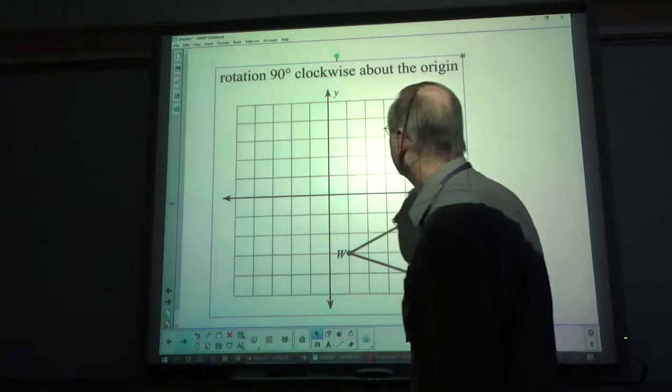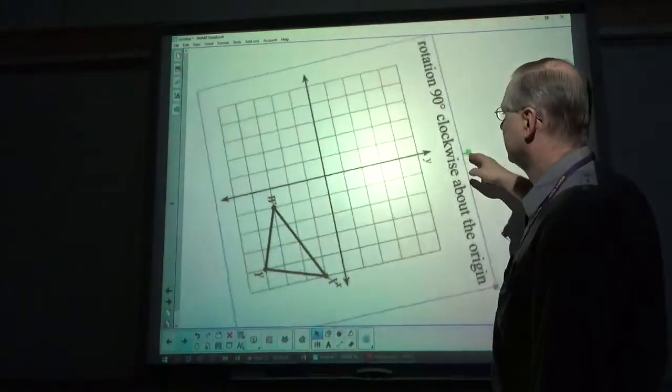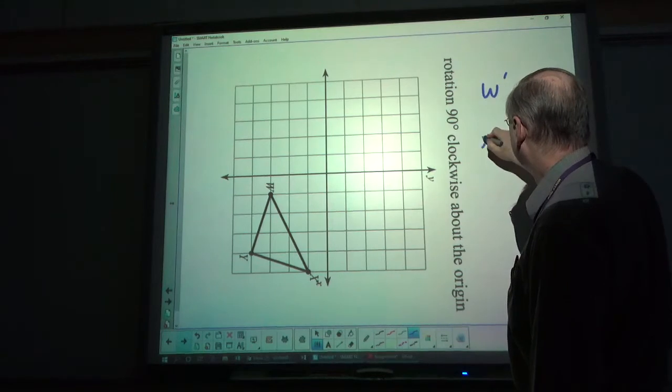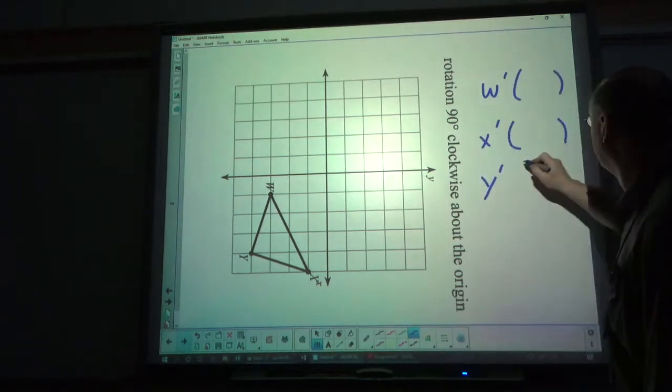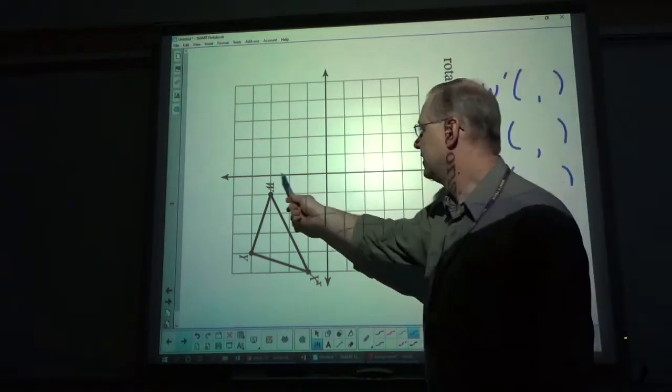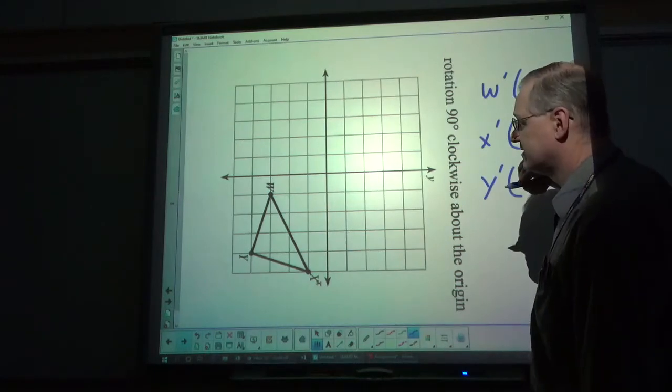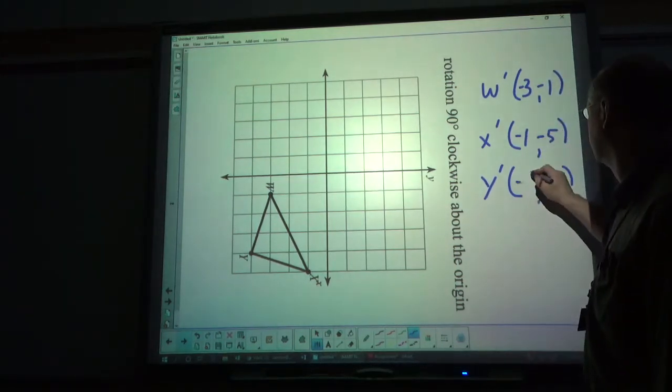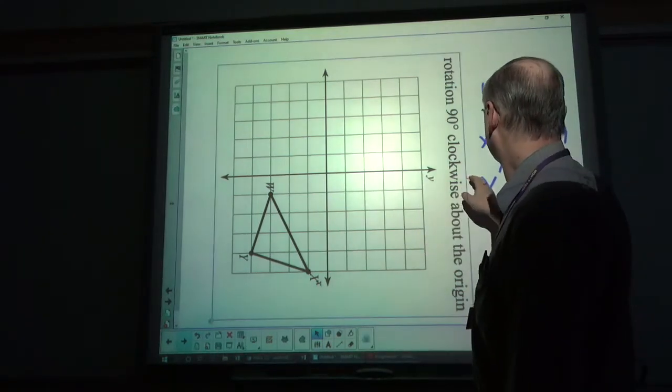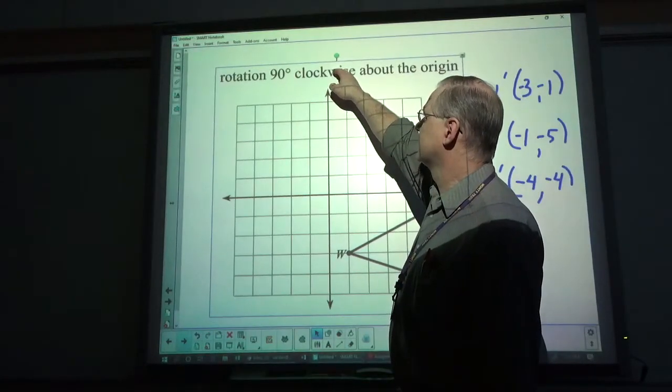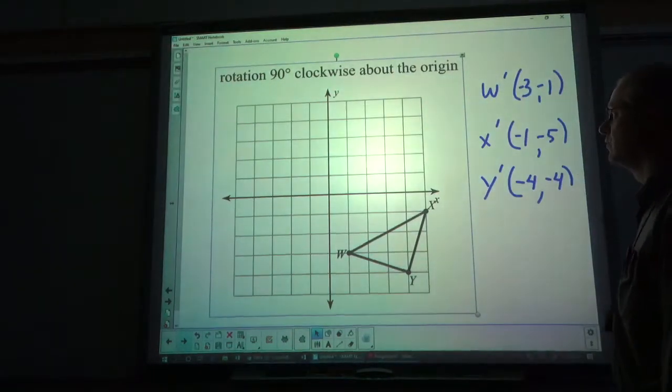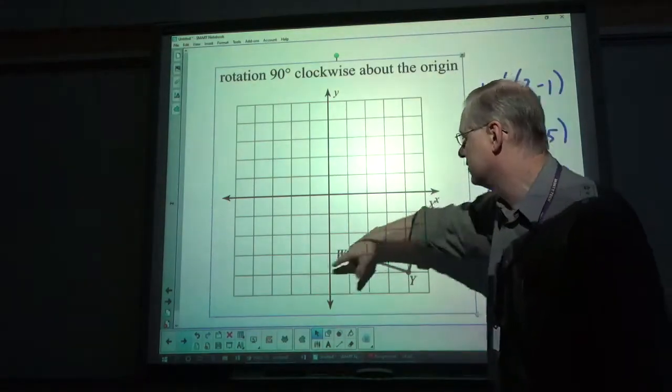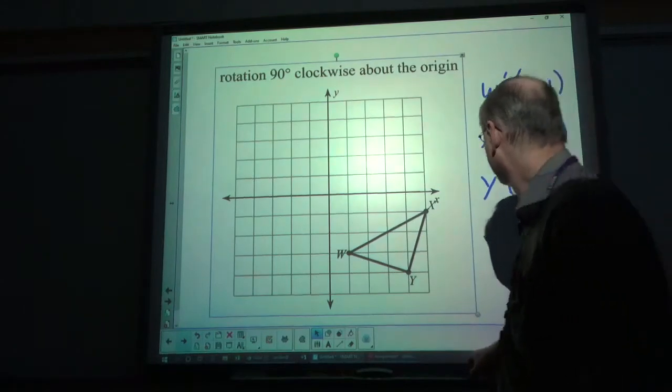Here we go. I'm going to unpause and clockwise about the origin, ninety degrees. W prime, X prime, and Y prime. W ends up at negative 3, negative 1. X is at negative 1, negative 5. And Y is at negative 4, negative 4. I'll move this back. Sometimes they just ask what quadrant it'll end up in when you rotate it. And you can see this is going to turn it this way. So this is going to go that direction, 90 degrees. So it ends up in the third quadrant in this case.